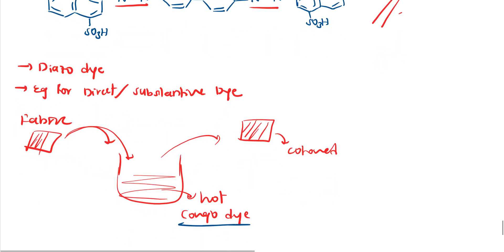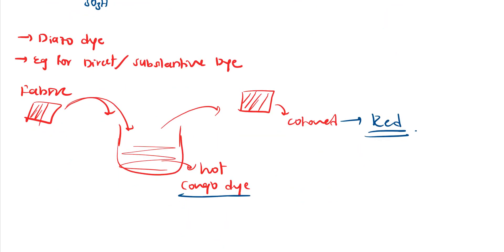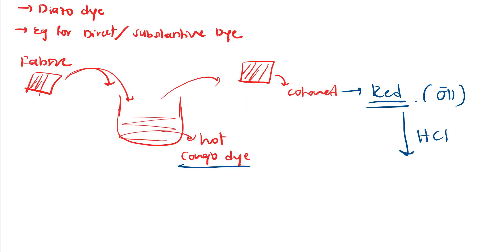Congo red dye gives a red color. In alkaline medium (OH⁻), it appears red. However, when excess inorganic acid like HCl is added — in acidic medium — it converts to violet color.